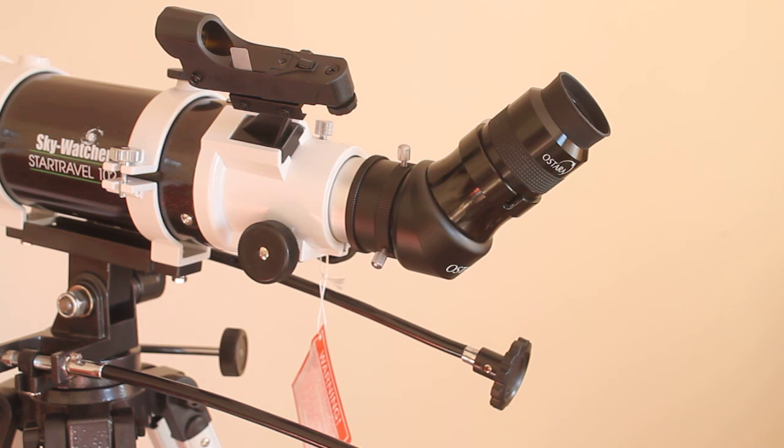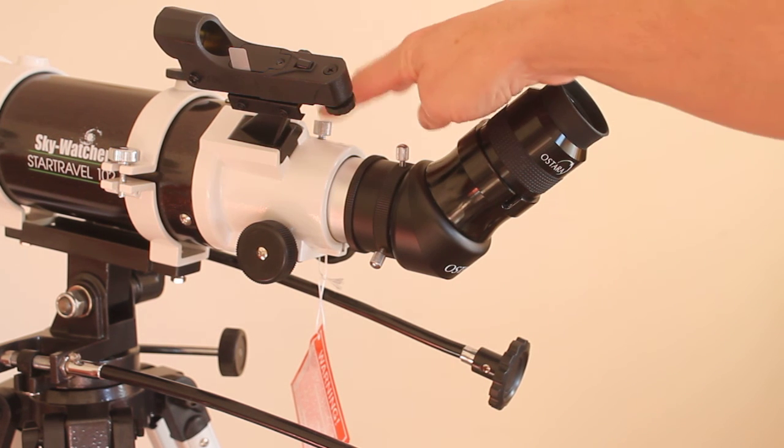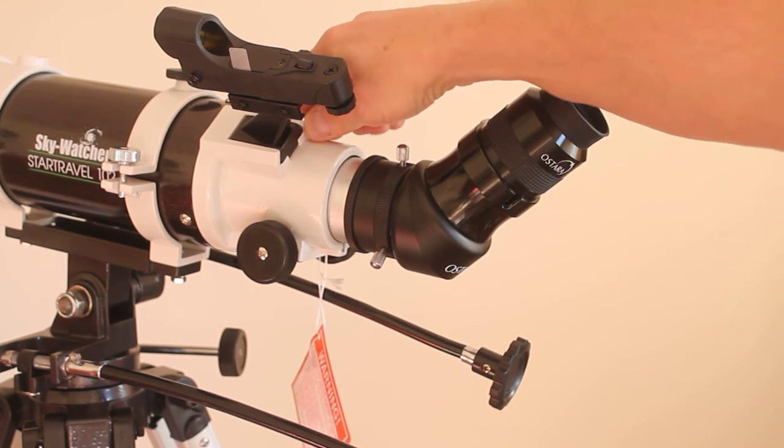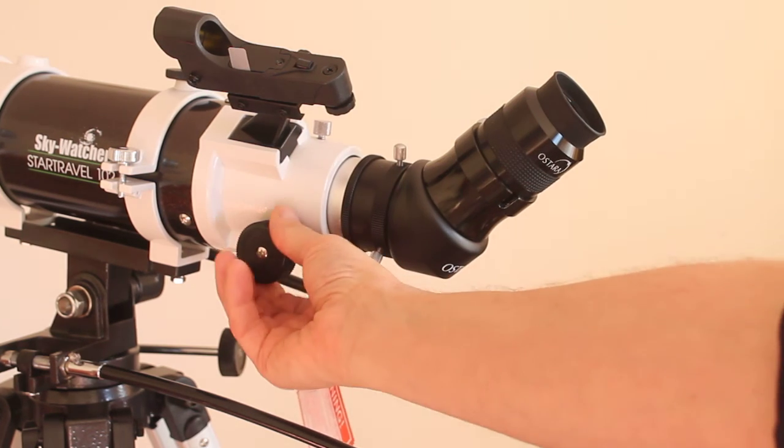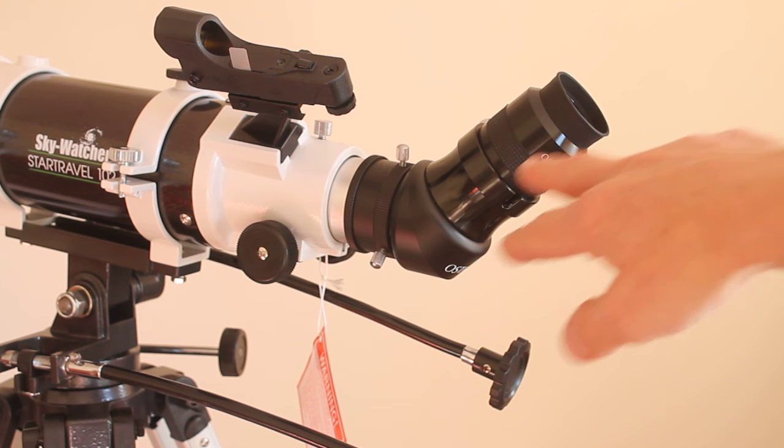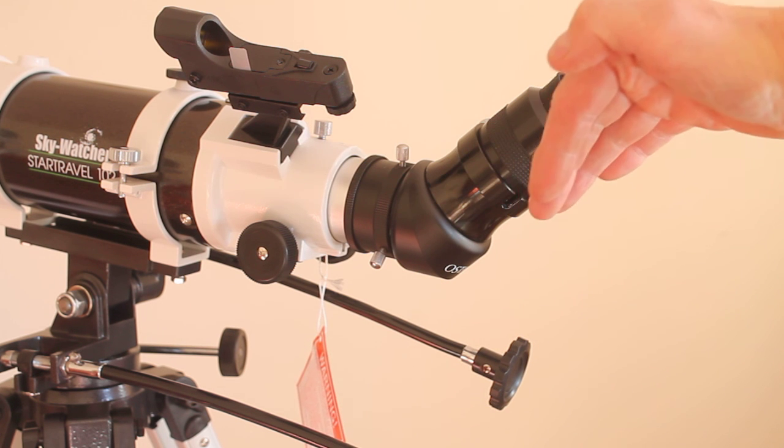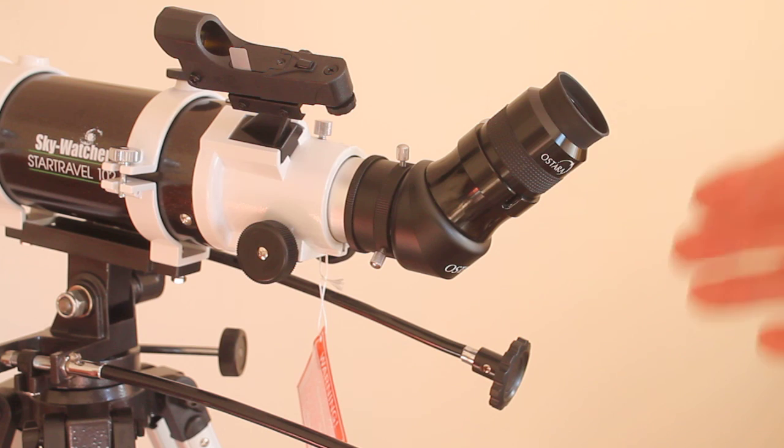Speaking of which, with this Sky-Watcher you can just see a little screw there on top, and you can adjust the tension of your focuser. Because if you're looking quite high up and you've got quite a heavy eyepiece on there, it may slowly start creeping down - same as if you're doing DSLR photography - so you can tighten the focuser up.